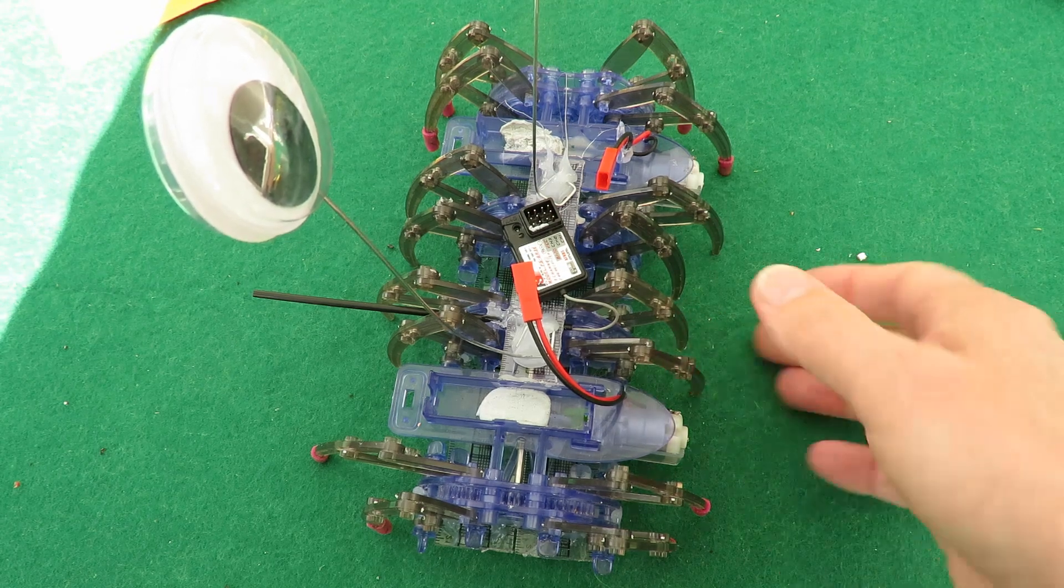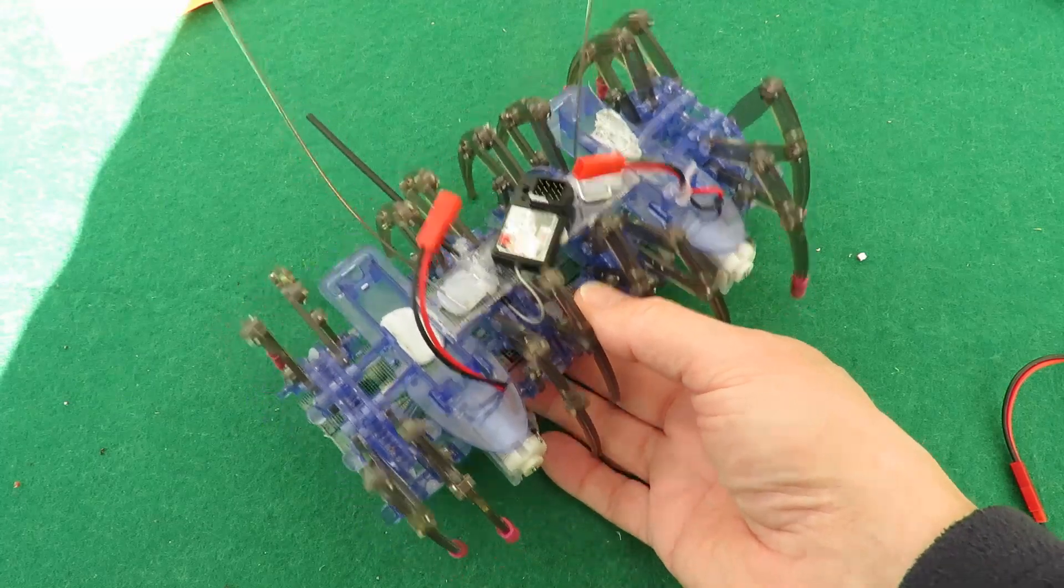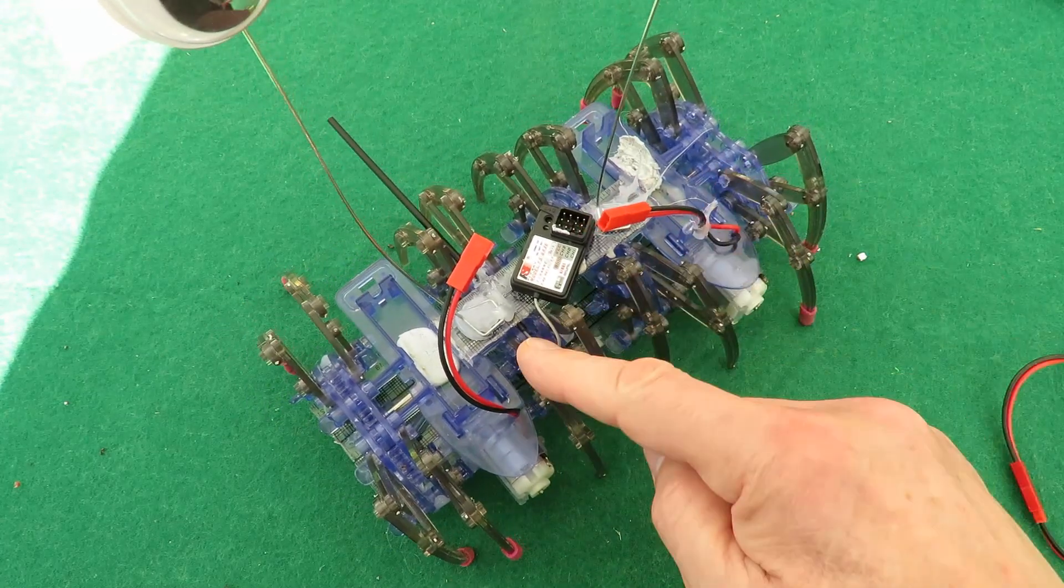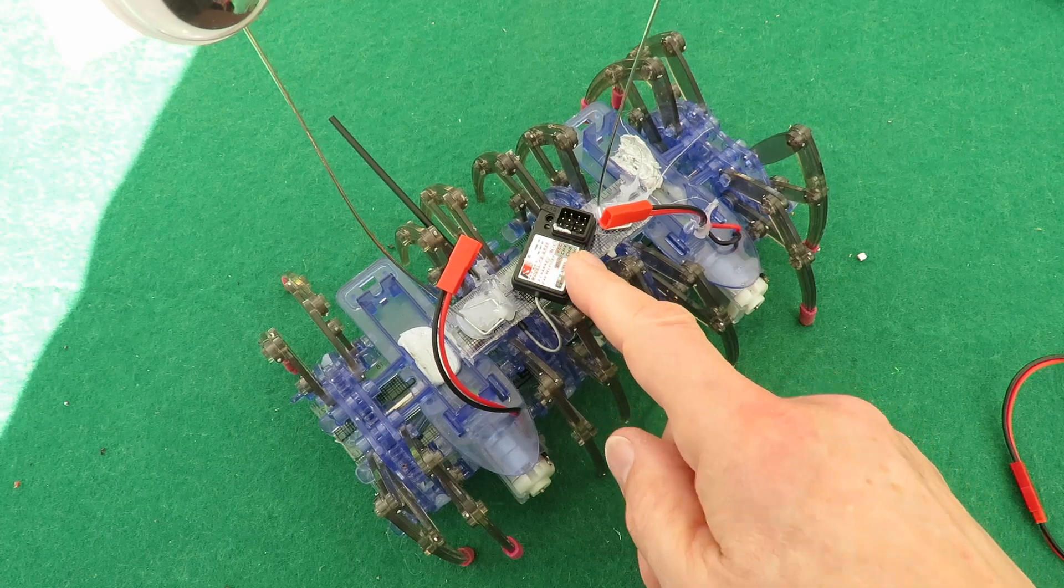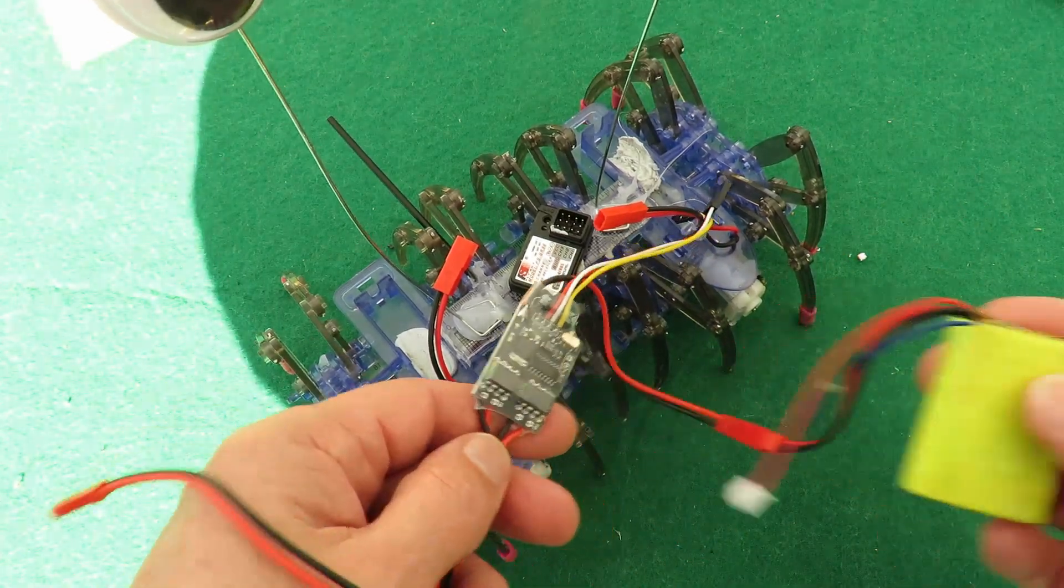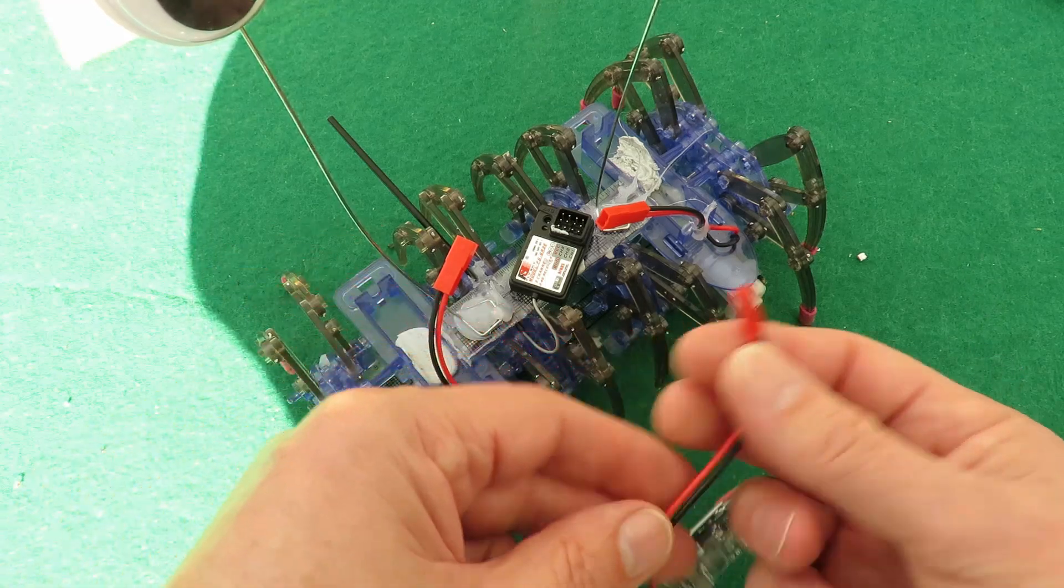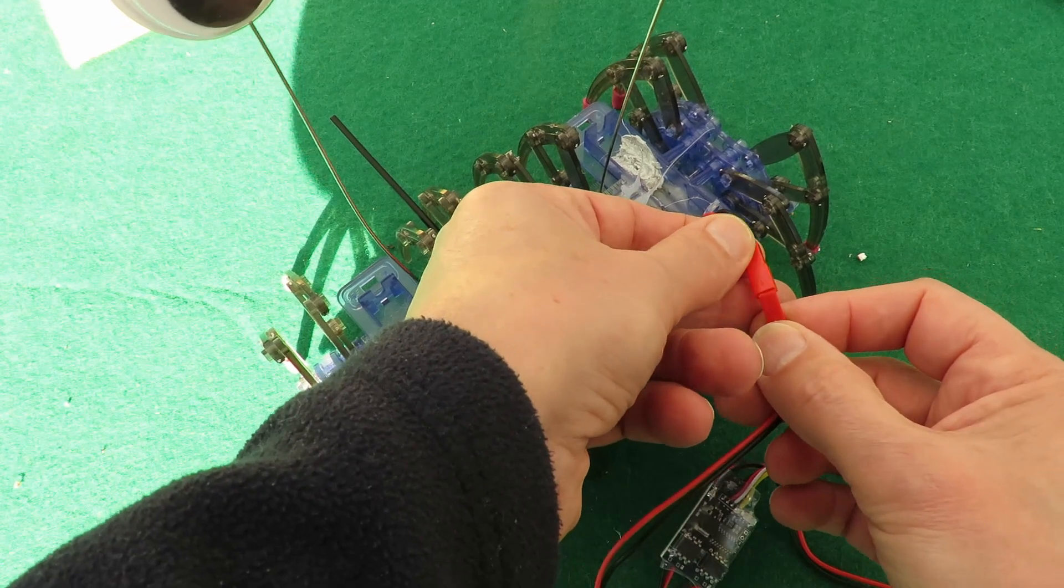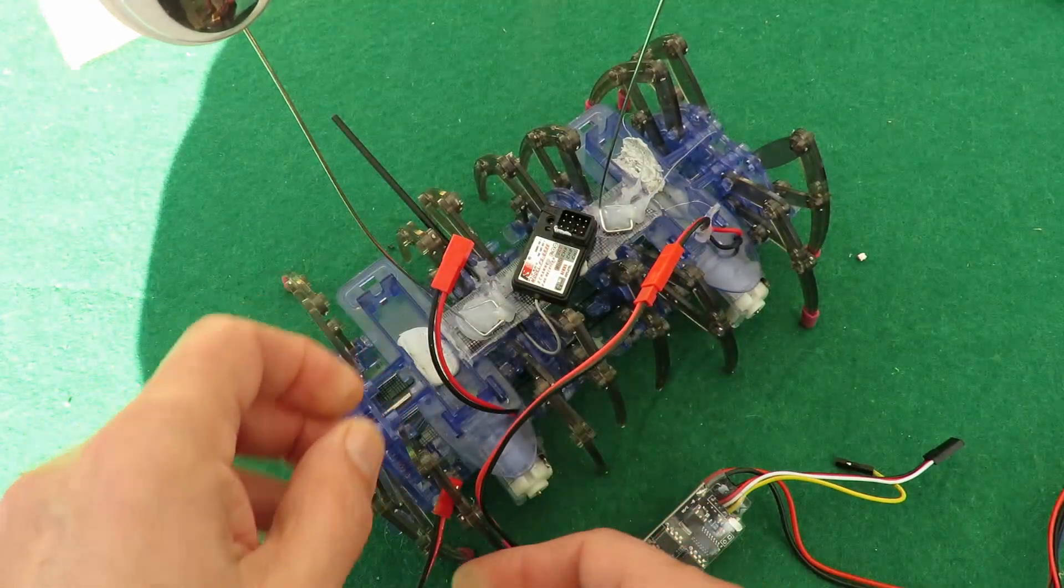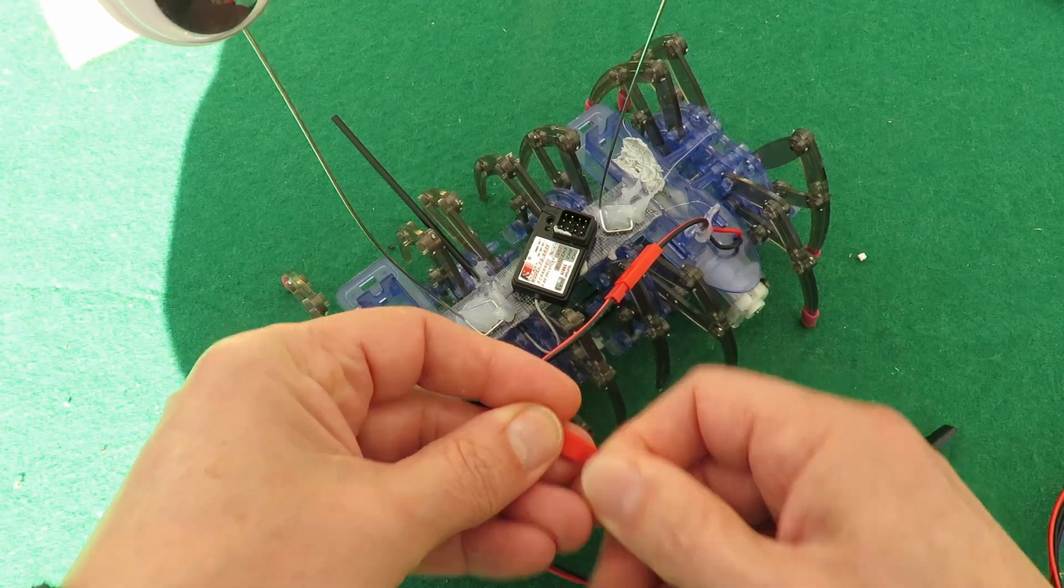My old friend here, my crawler bot, spider bot, which has two motors. And I've got a fly sky receiver there. So battery, ESC. Stick one in there. One in there.